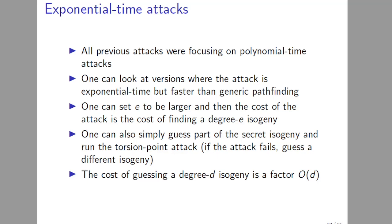All these conditions were concerned with polynomial-time attacks, but you can also look at attacks which are exponential time but faster than generic path-finding algorithms. We have derived two types of methods for dealing with this situation. One is that you can increase the size of e, and then the cost of the attack is just the cost of finding a degree-e isogeny, because all the other parts of the attack are polynomial time. The other one is you can guess part of the secret isogeny, which will reduce A, and then run the torsion point attack. Of course, the attack can fail if the first guess was wrong. And if it fails, then you choose a different guess. Guessing a degree-d isogeny will give you a factor d in complexity.